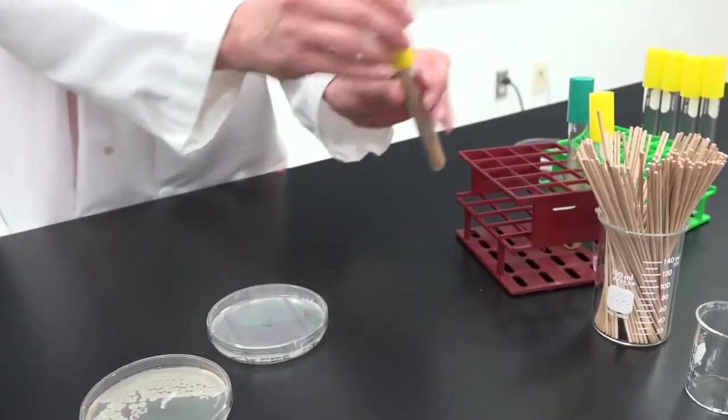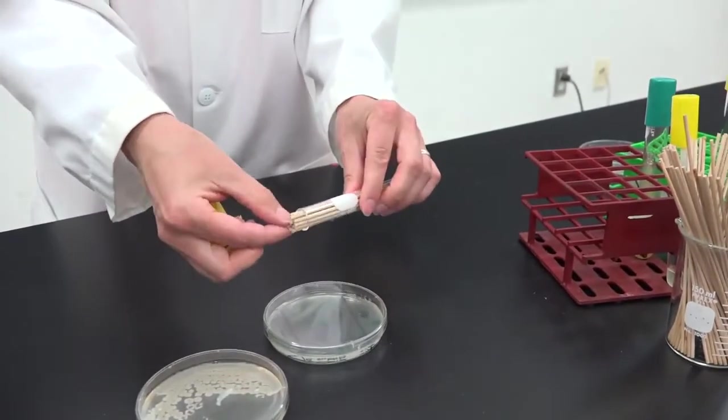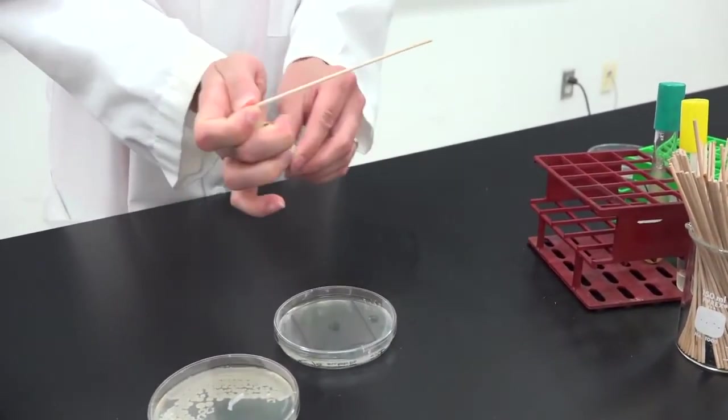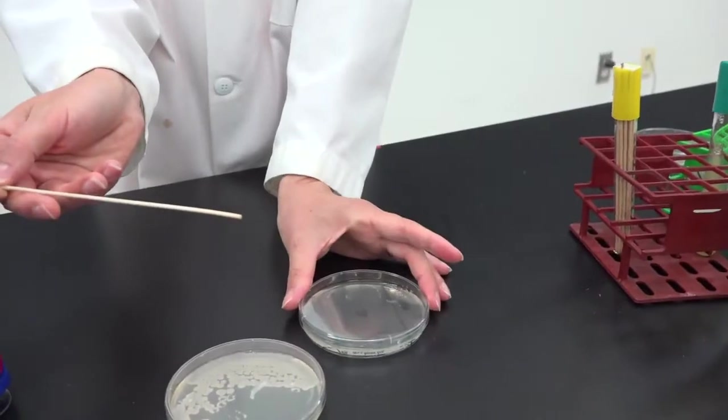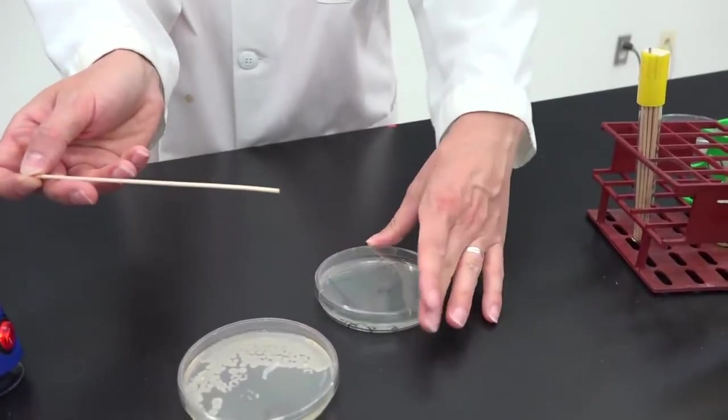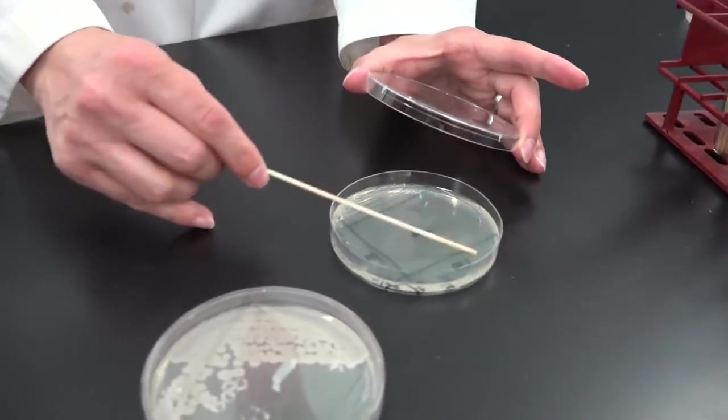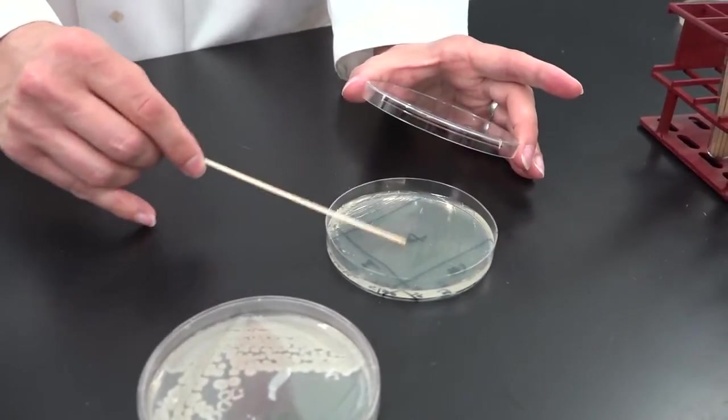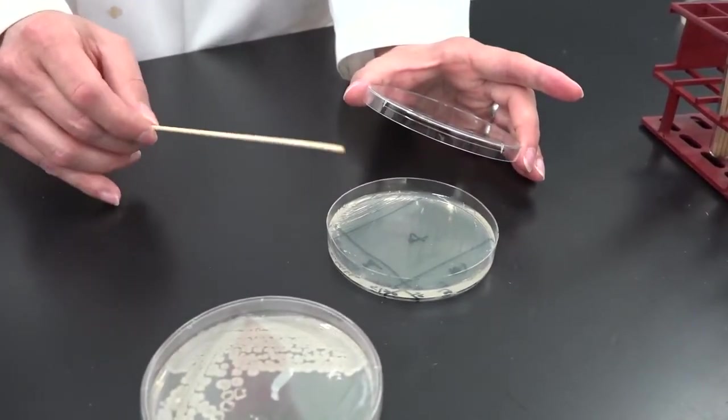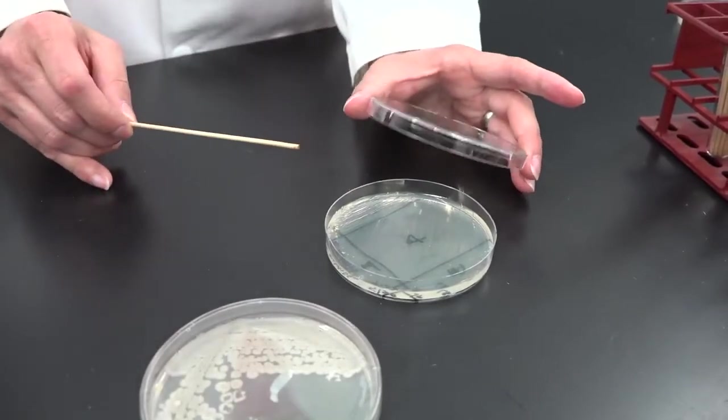Discard that stick and get a fourth and final stick from your tube. Rotate the plate 90 degrees again and take the bacteria from quadrant three and spread them in quadrant four. This time spread them out over the entire area without overlapping strokes. Do not touch quadrants one or two again.